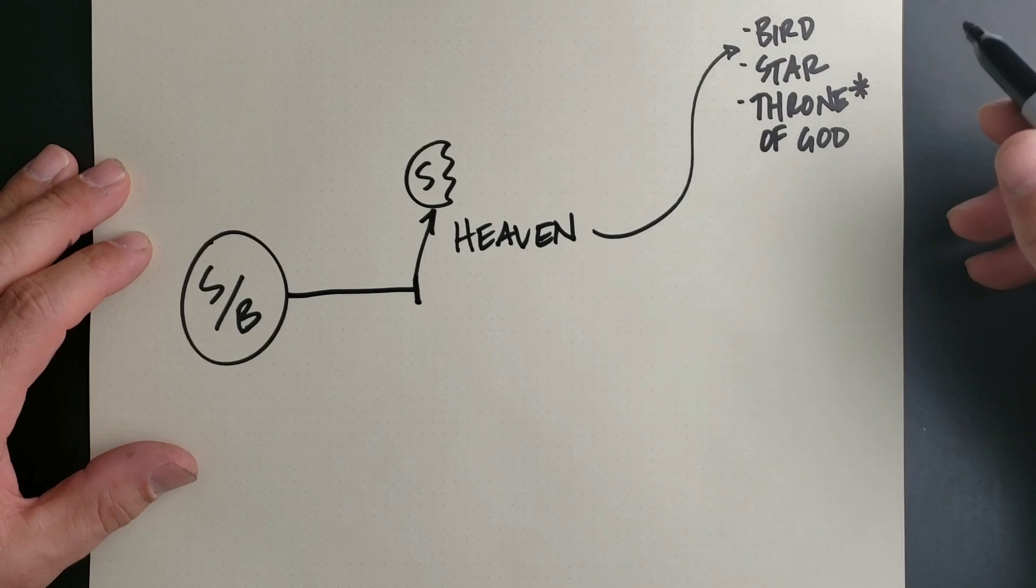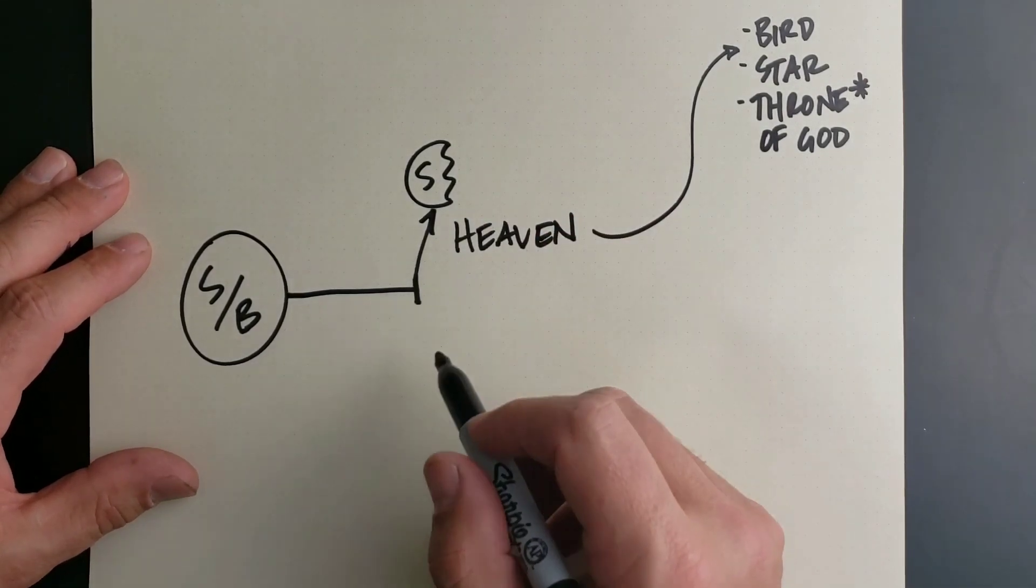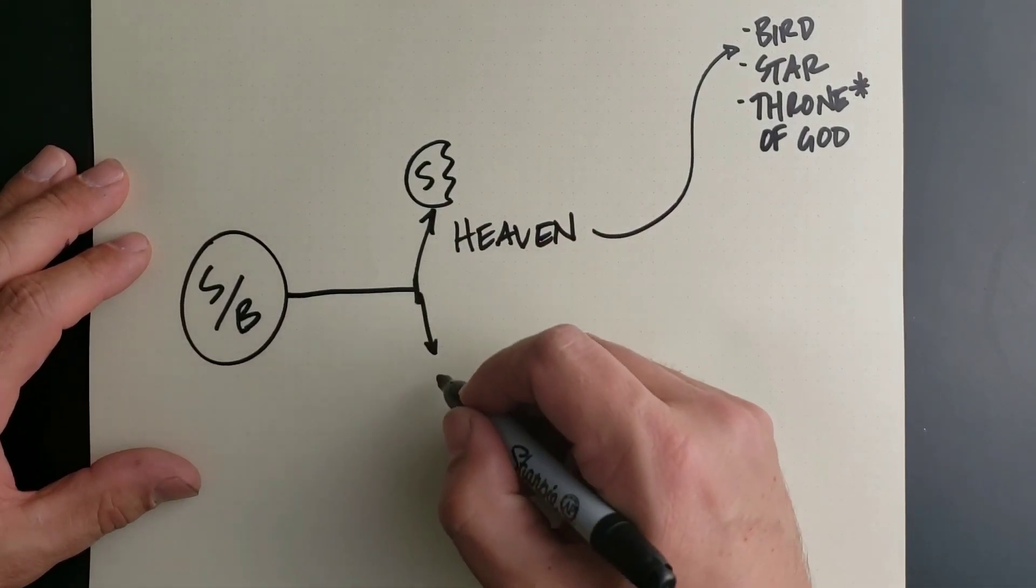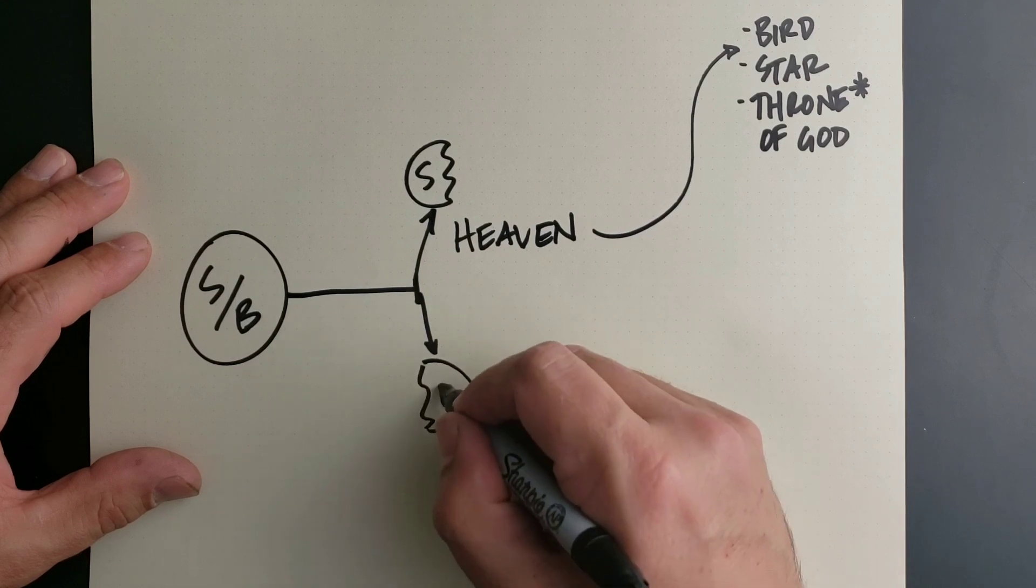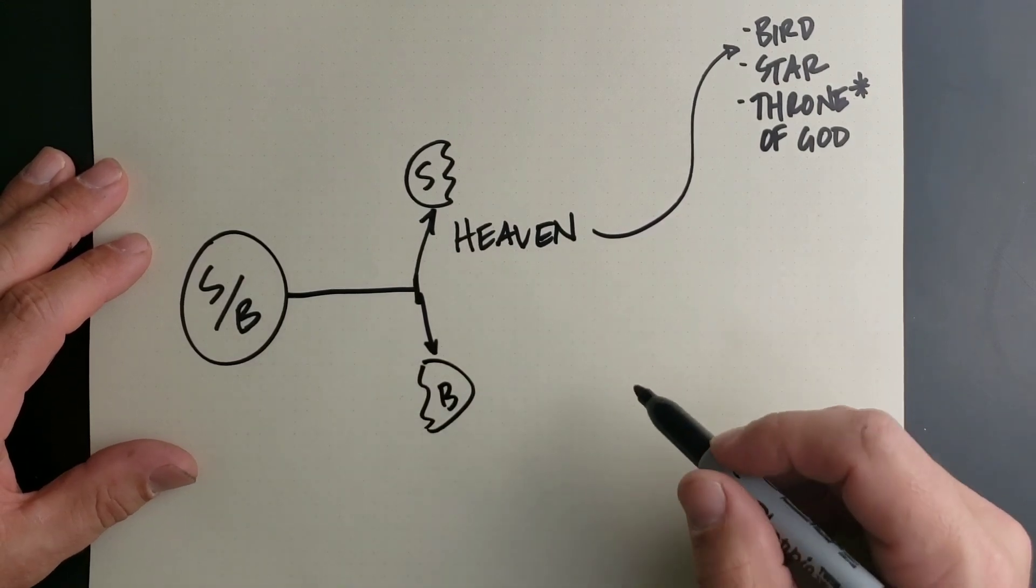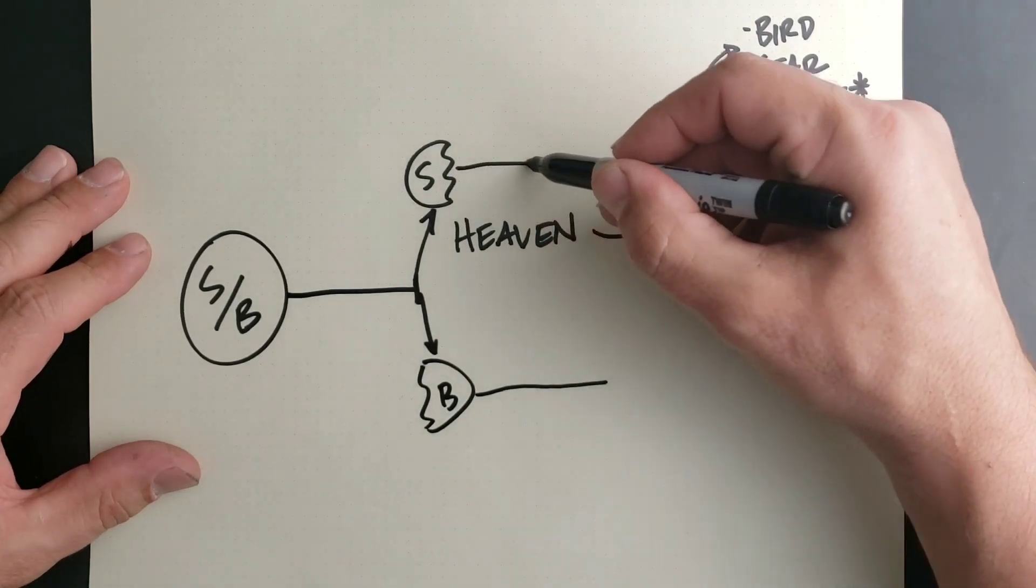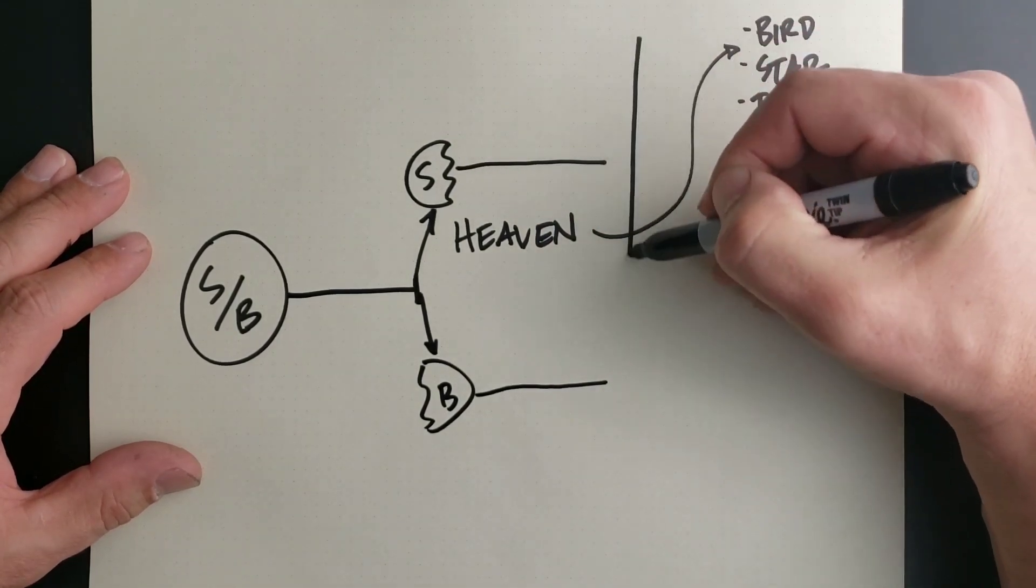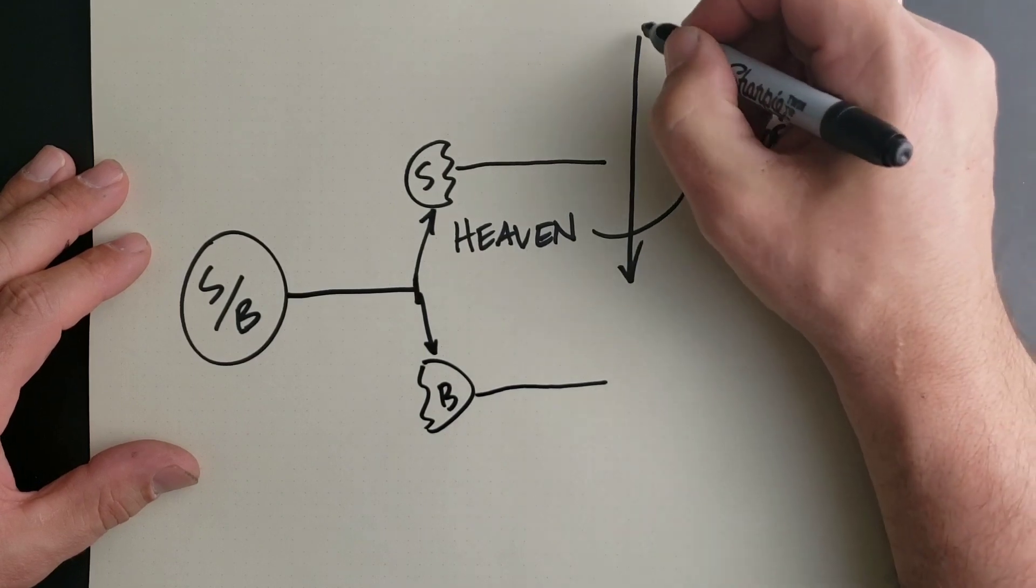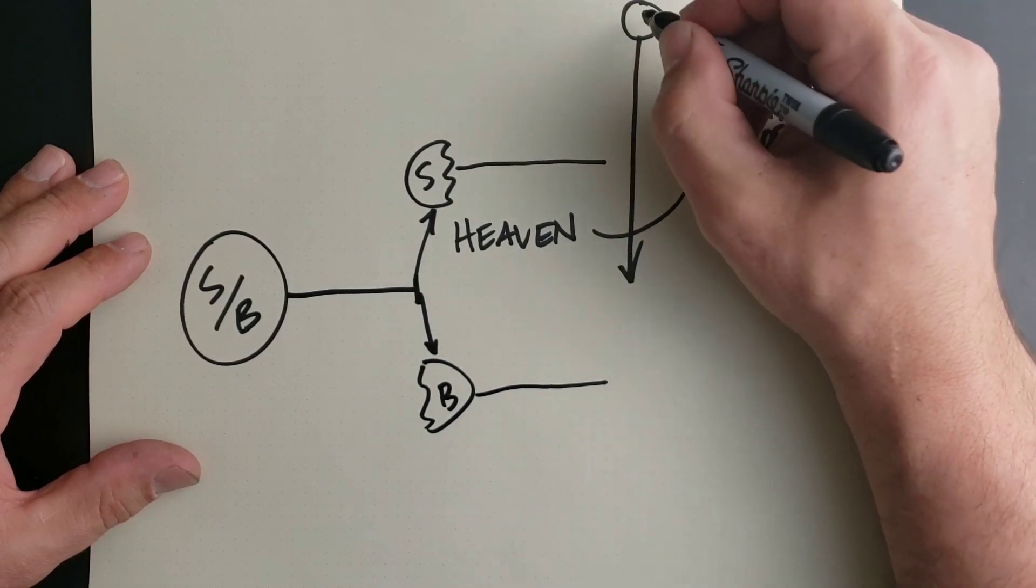And this is the heaven that we're talking about. When we die, our soul goes to the face of Jesus. Our body, on the other hand, goes to the grave or to the ocean or whatever. And that state continues. It's what's called by the theologians the intermediate state until Jesus comes back to judge the quick and the dead.